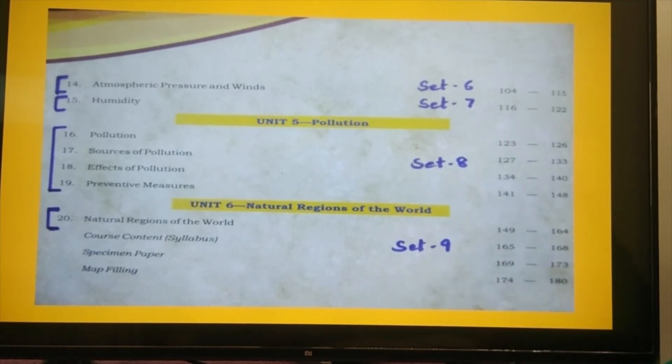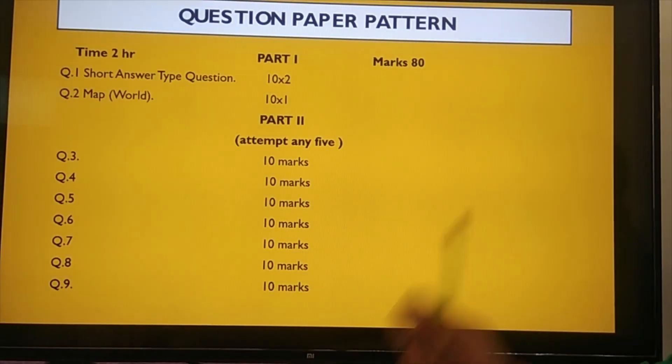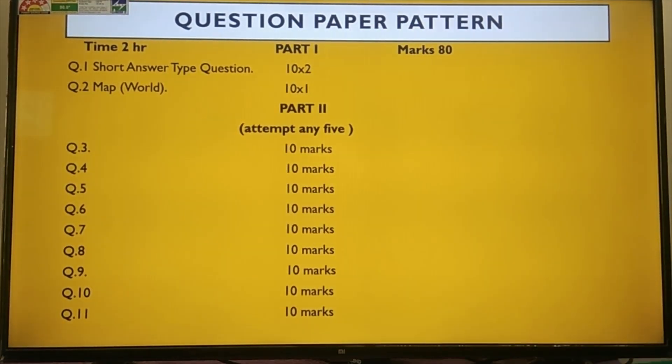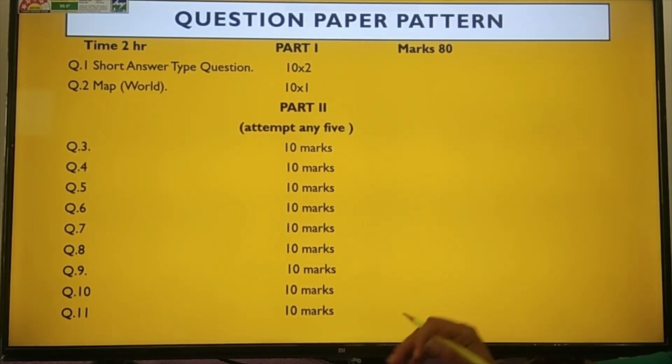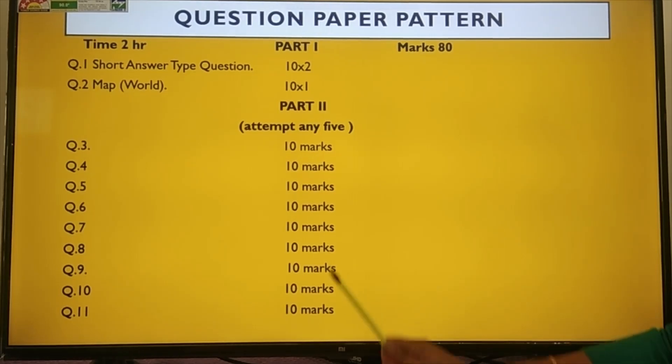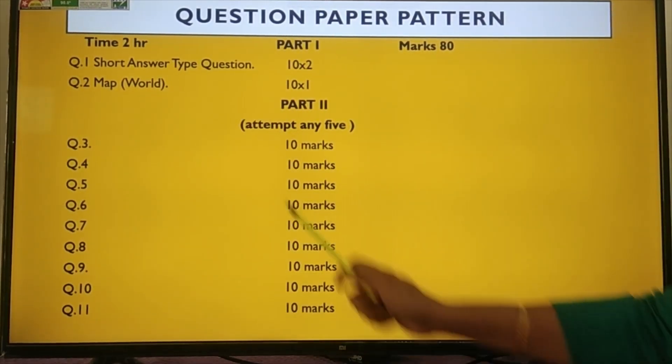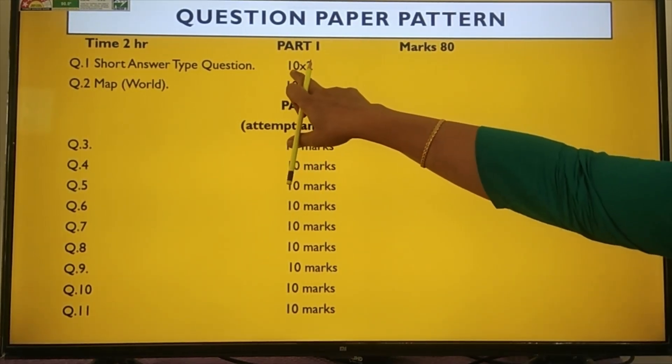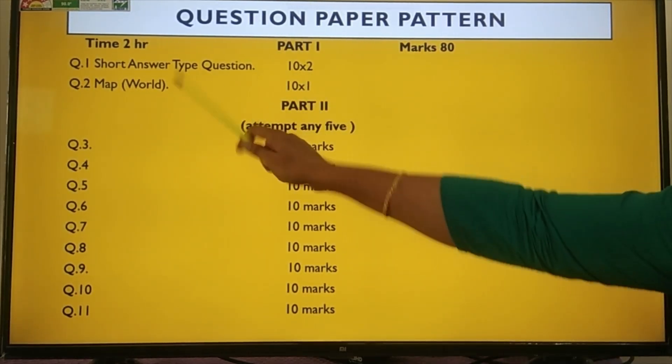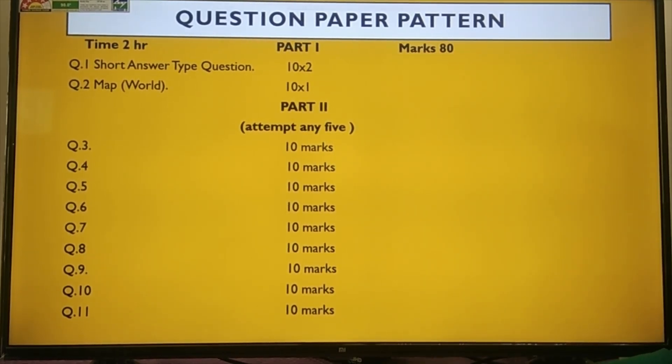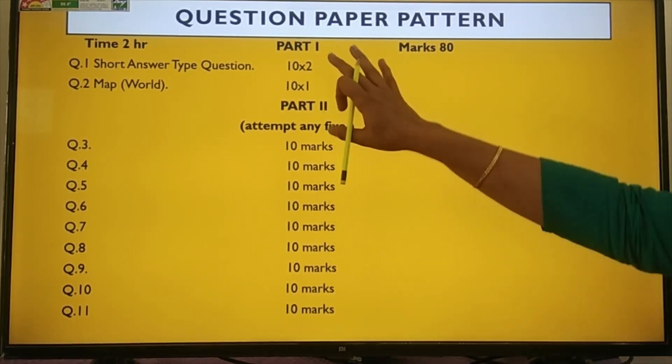Now we are going to discuss the question paper pattern of class 9. So this is our question paper. The duration will be 2 hours and the paper will be out of 80 marks. This question paper has two parts: first part and second part. First part is obligatory, meaning it is compulsory with no choice. In first part, there are two questions. First question has short answer type questions, 10 in number, each carrying 2 marks. Second question is map filling on a world map, 10 questions, each carrying 1 mark. So 20 plus 10, 30 marks. Part 1 will carry 30 marks.